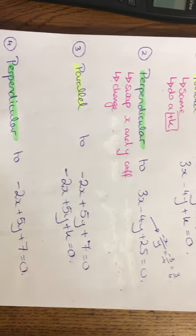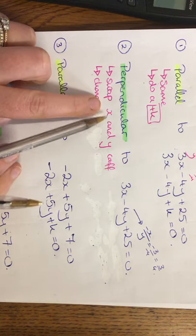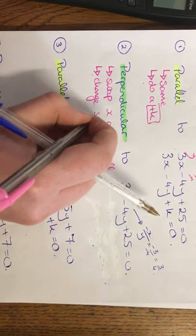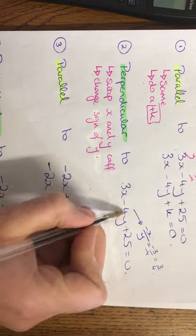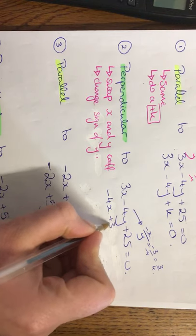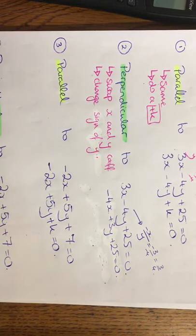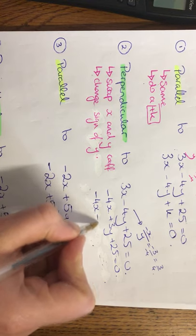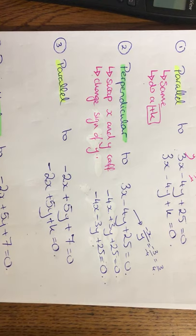Perpendicular just has a small bit more in it. So what do we do if it's perpendicular? You swap the x and y coefficients. So you're going to swap these two and then change sign of y. So you're going to have minus 4x plus 3y plus 25 equals 0. And your last step, you're going to change that to a minus. So you have minus 4x minus 3y plus 25 is equal to 0.